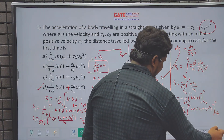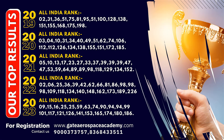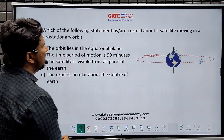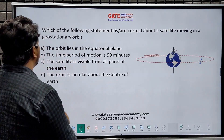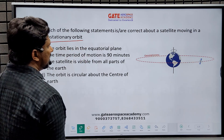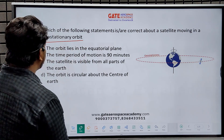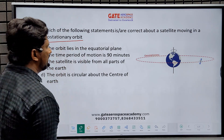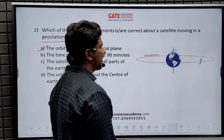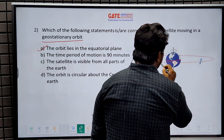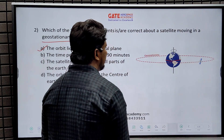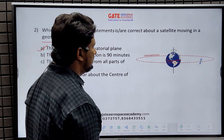Let's see the next question. This is an MSQ question asked for one mark: which of the following statements are correct about a satellite moving in a geostationary orbit?